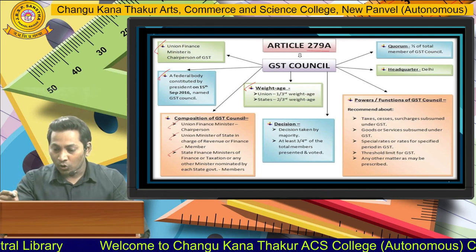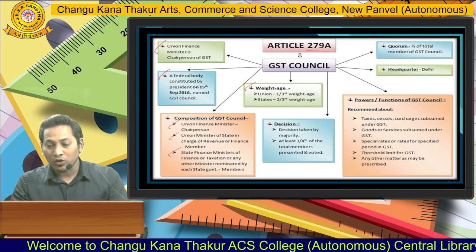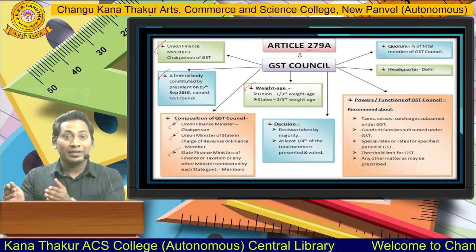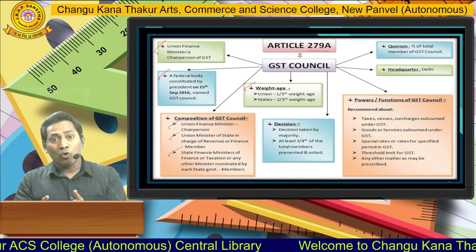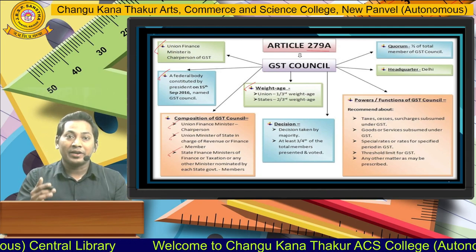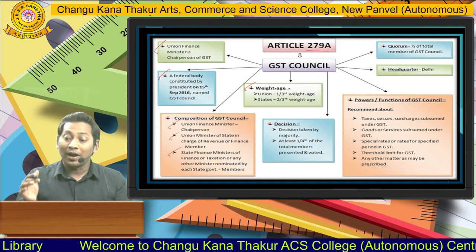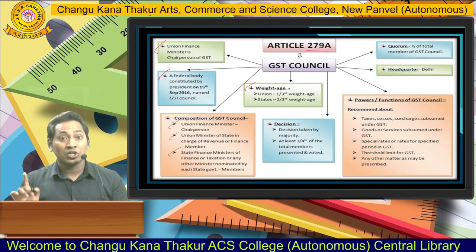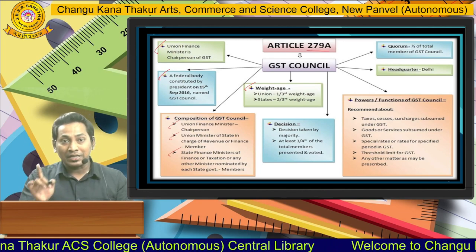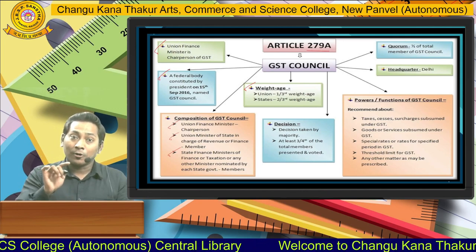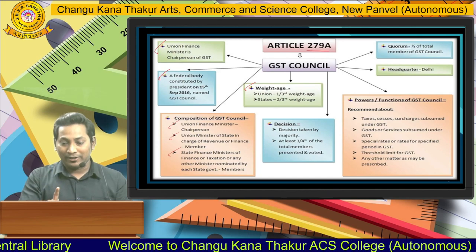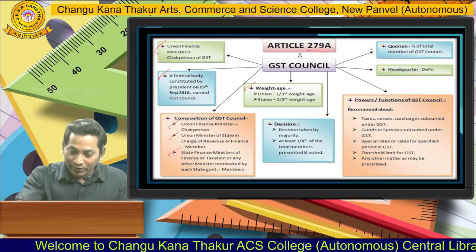Moving to the quorum: the quorum requires half of the total members of the GST Council to be present. Since there are 33 members, if only 10 members appear, the meeting cannot be held. At least 16 or 17 members need to be present to conduct a GST Council meeting. This quorum requirement is really important and needs to be noted.